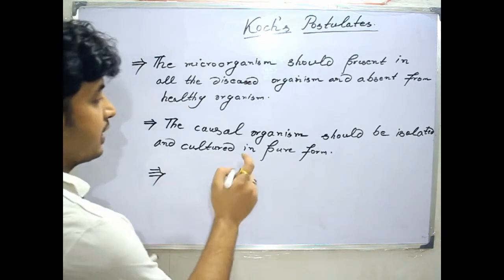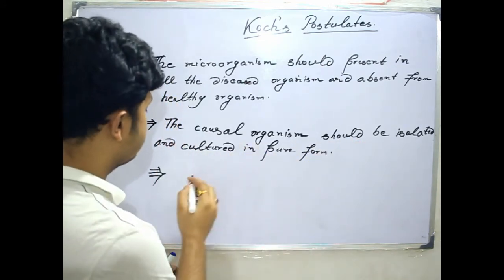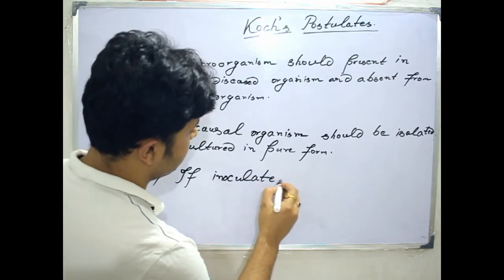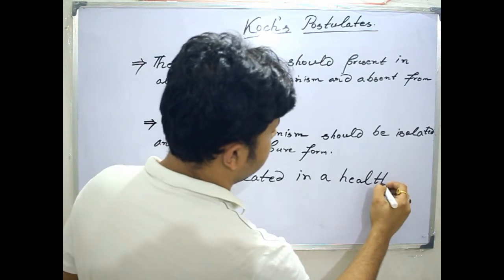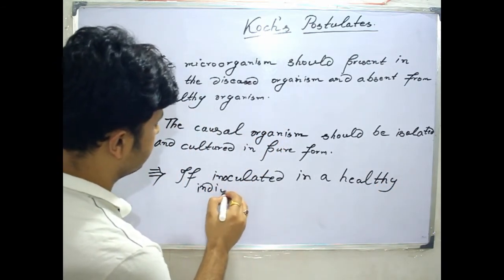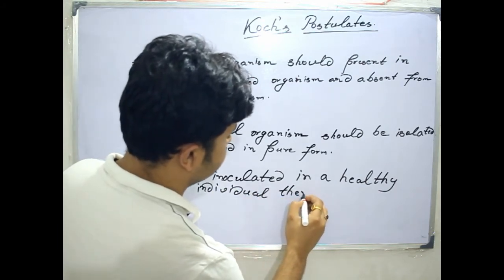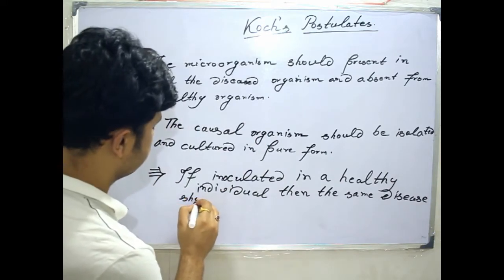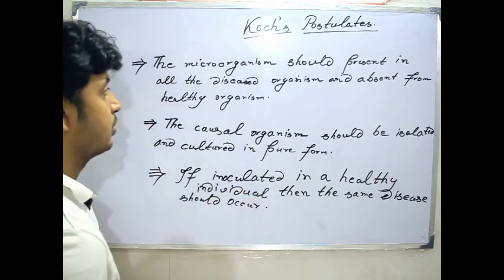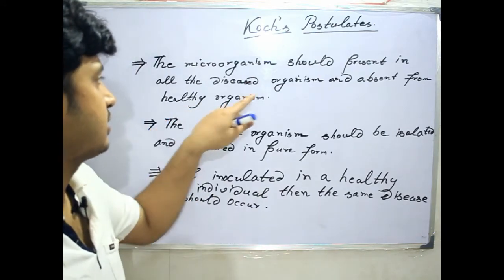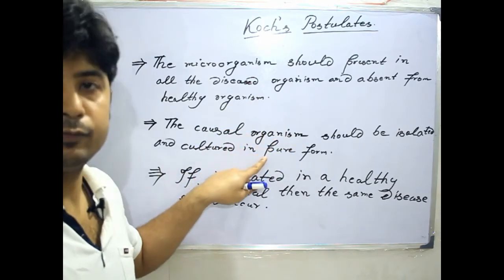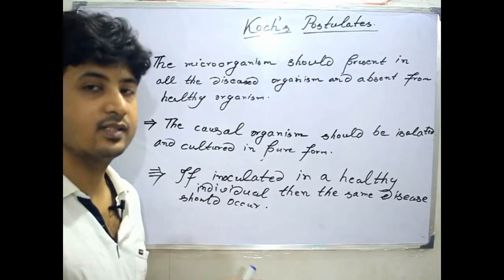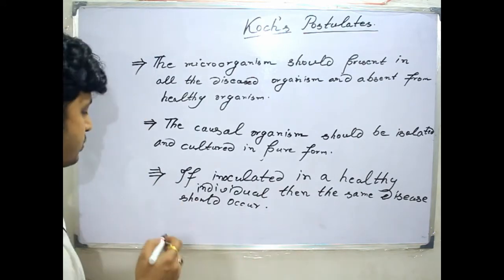The third postulate is that the isolated organism, if inoculated into a healthy individual, then the same disease should occur. So the pathogenic E. coli was the causal organism in my case — it was isolated and cultured in pure form, and that pure culture is again inoculated into a healthy individual, and the same symptoms and the same disease appear in that healthy individual.